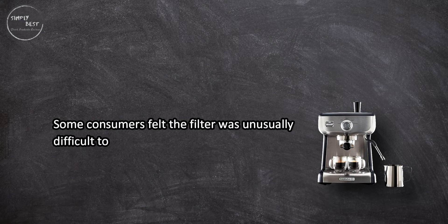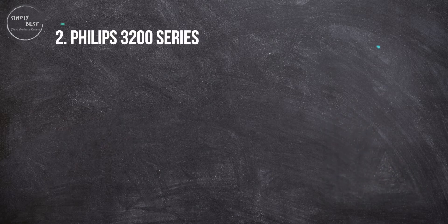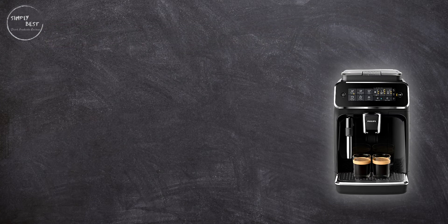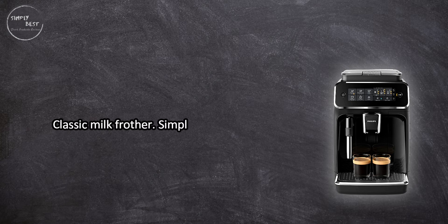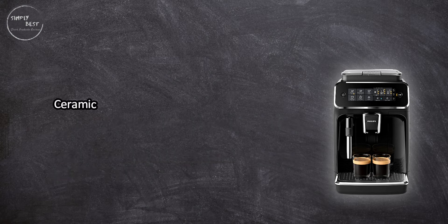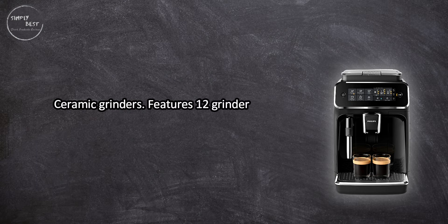At number two, Philips 3200 series coffee and espresso maker. Classic milk frother, simple to read touch display, easy to make a perfect espresso, cup of coffee, or milk-based drink. Ceramic grinders, features 12 grinder settings, uses an aqua clean filter.